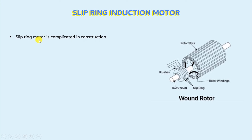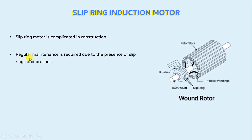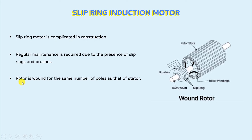First, we will talk about the slip ring induction motor. The construction of a slip ring motor is complicated due to the presence of slip rings and brushes. Moreover, regular maintenance is also required in a slip ring induction motor due to the presence of slip rings and brushes. The rotor of a slip ring induction motor is wound for the same number of poles as that of the stator, so the number of poles in the stator and rotor of a slip ring induction motor is the same.